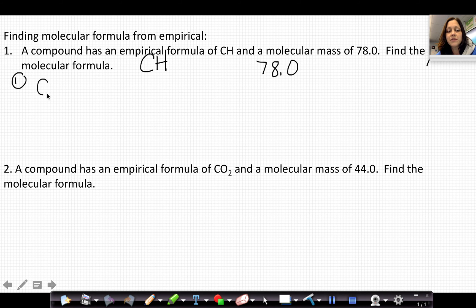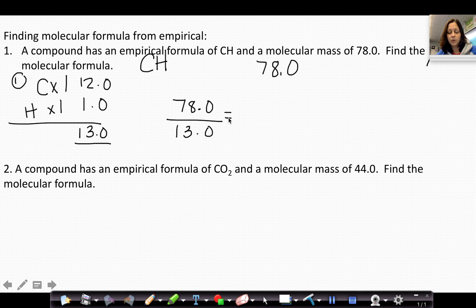So the first step is going to be to find the mass of what's in the empirical formula. We're going to do that the same way that we did it for finding the gram formula mass. So C on the table is 12.0, H on the table is 1.0, and that is a total of 13.0 for the mass of the empirical formula.